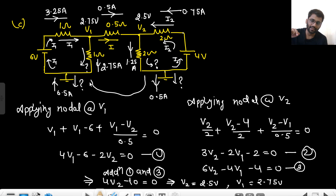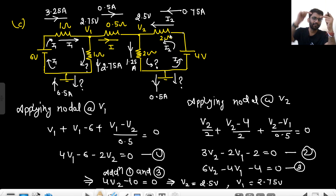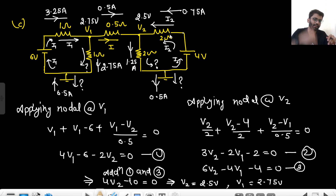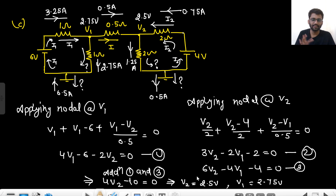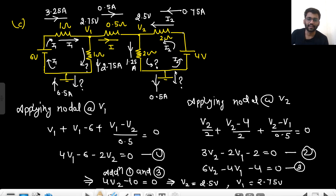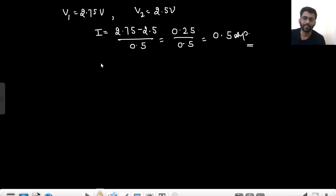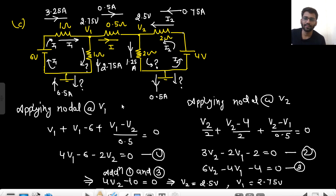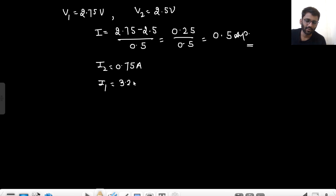You can see 3.25 ampere going one way, 0.5 ampere going through the middle, and 2.75 ampere another way. To the ground: 3.25 coming in and 2.75 coming from the source means ground drives 0.5 ampere. From the other side: 1.25 and 0.75 ampere, so ground again provides 0.5 ampere. So I2 equals 0.75 ampere, I1 equals 3.25 ampere, and current in ground equals 0.5 ampere.